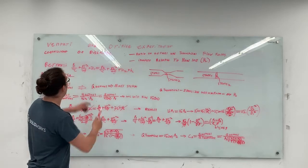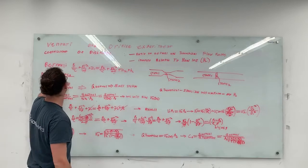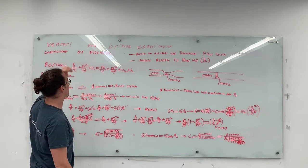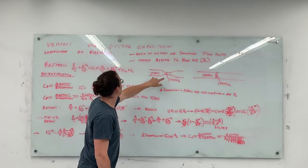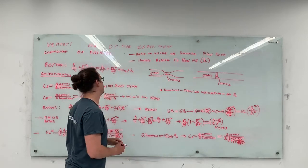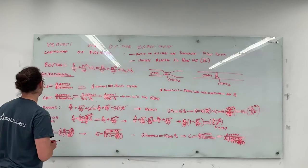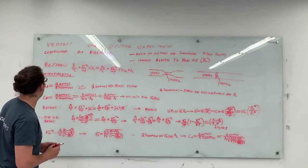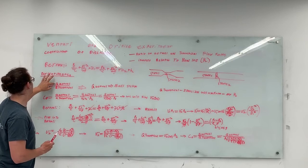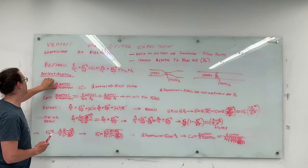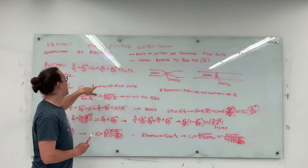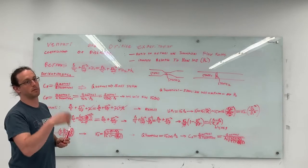Between those two states, this modified Bernoulli equation states that there will be some head loss — an energy loss between those two points. With this coefficient of discharge, you have q actual over q theoretical. The actual flow rate is found from the experimental setup.